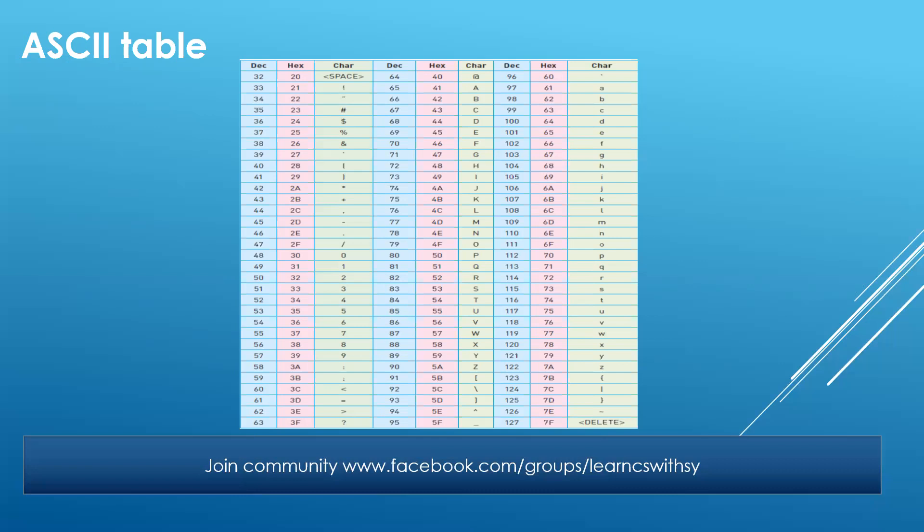Then we have the third set, again dealing with decimal values, the equivalent hex values, and the character value. Starting from 32 — as I said in the beginning, the first values from 0 to 31 are control codes, which are actually non-printable. So 32 in decimal is equal to hexadecimal 20, and that is basically the ASCII value for space — the space bar. Similarly, 33 is representing some symbol, 34 is quotation marks, then 35, 36, 37, and so on going till 127.